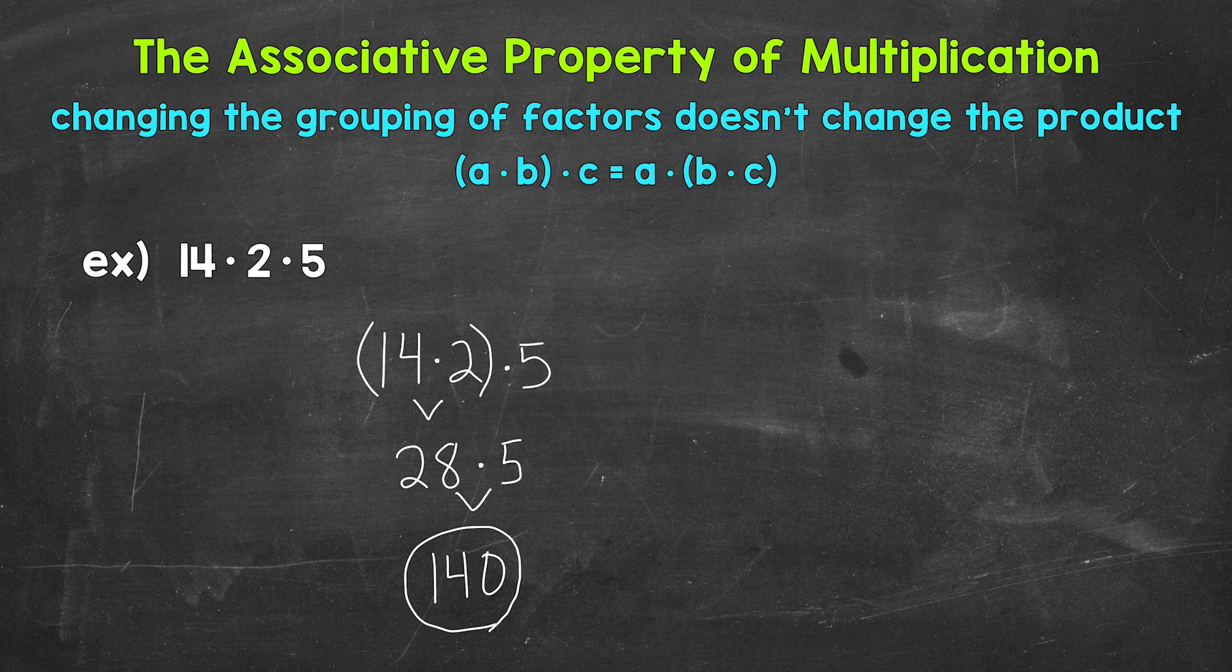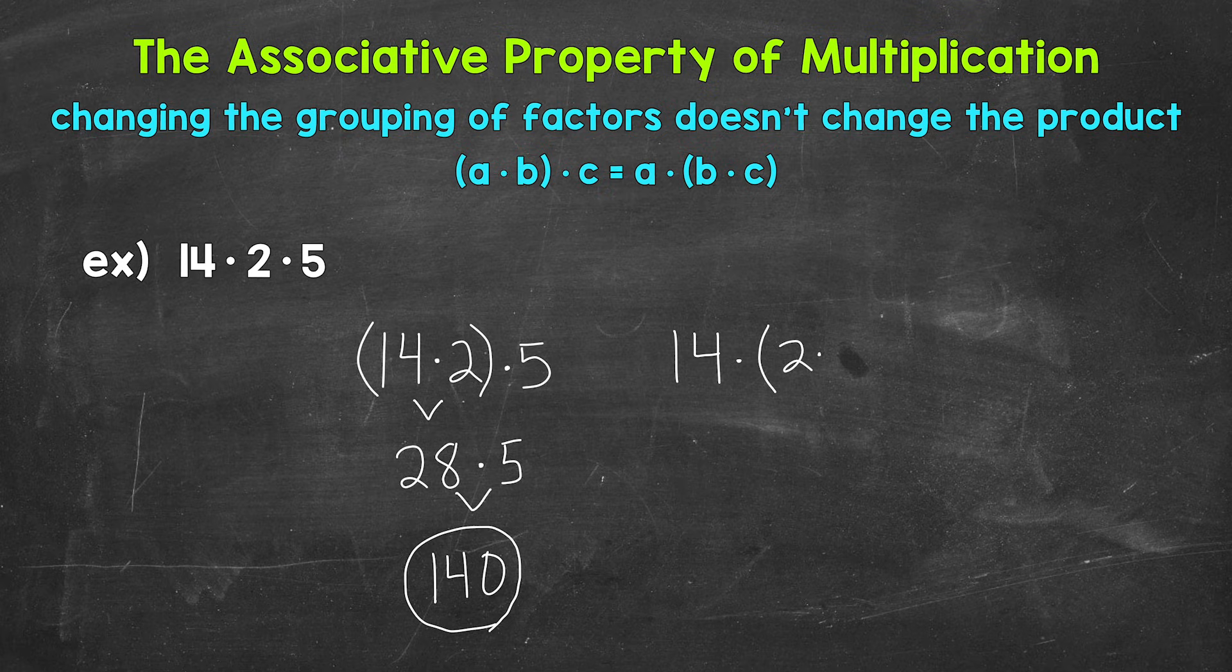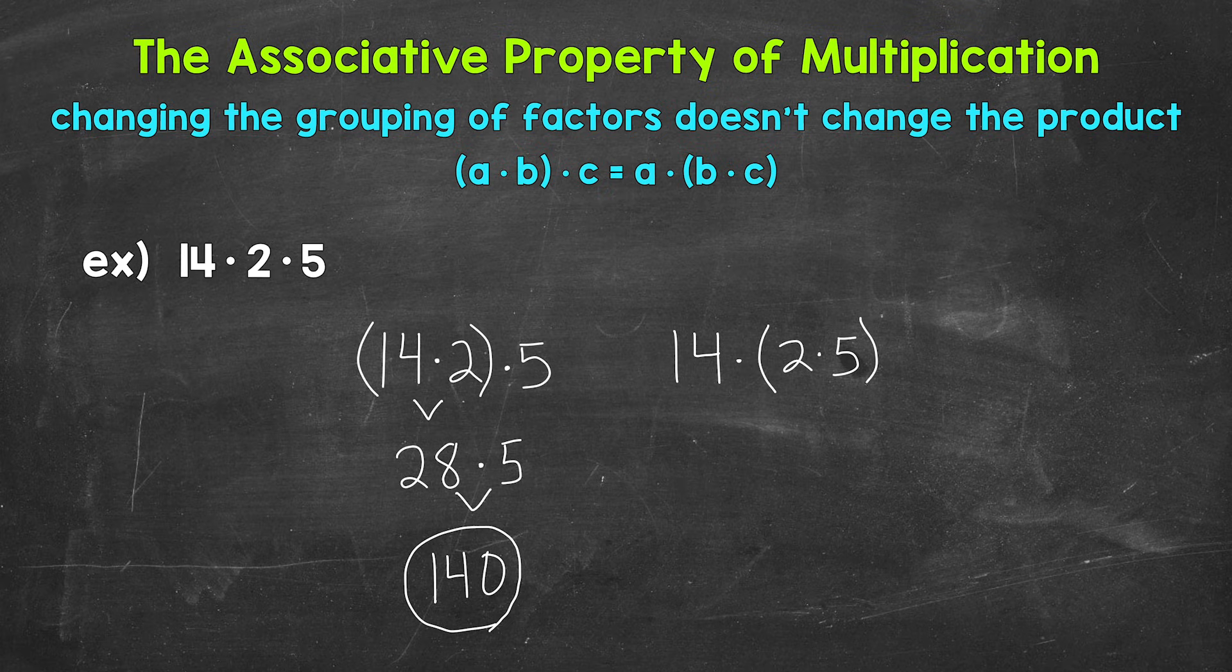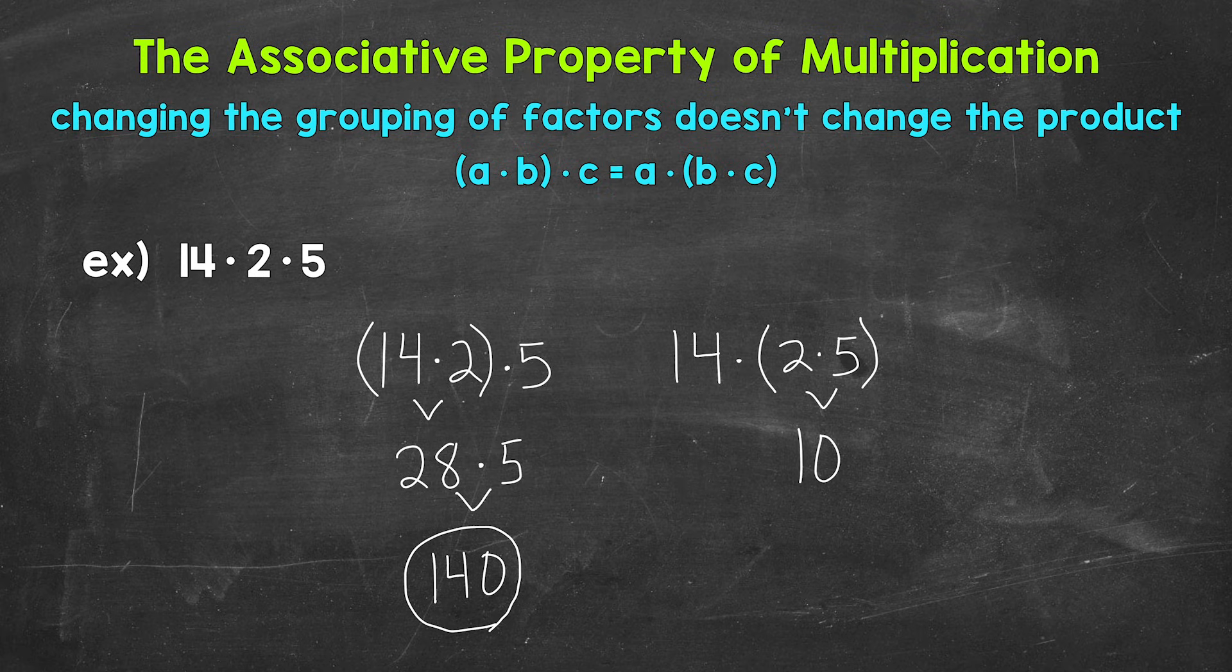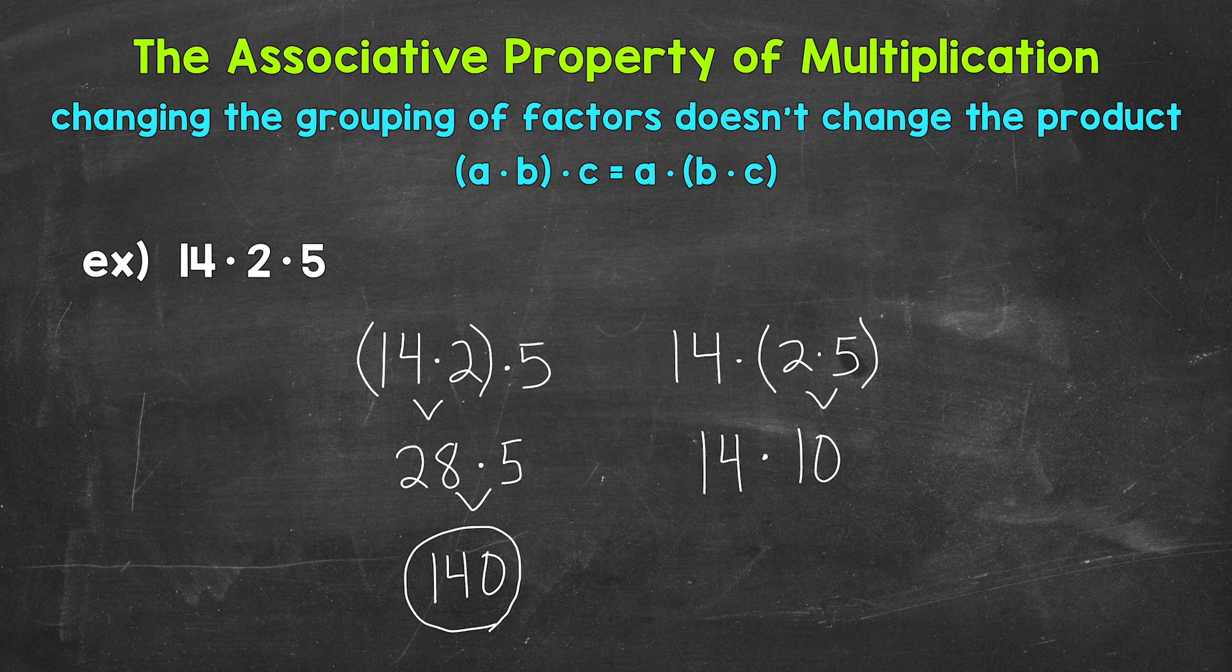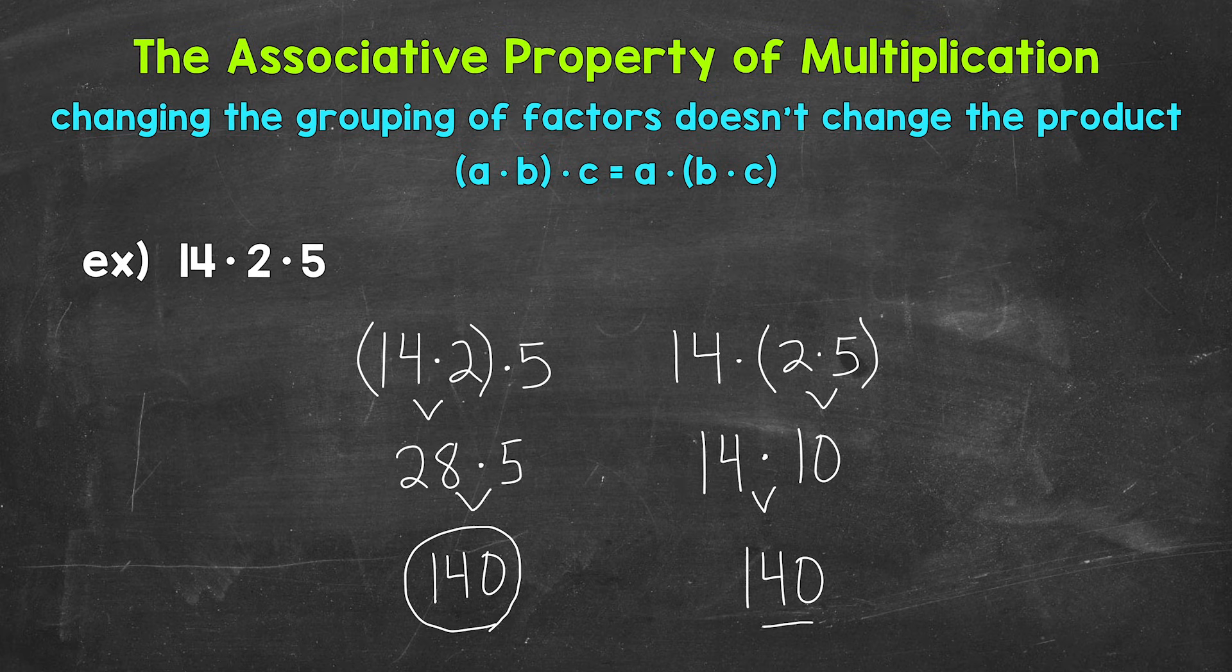Now let's group the 2 and the 5 and see if we get the same thing. So 14·(2·5). Now we can multiply, starting with the parentheses. 2·5 equals 10. Bring down the multiplication sign and the 14. Now we can end with 14·10, and that equals 140. So we got 140 that way as well.